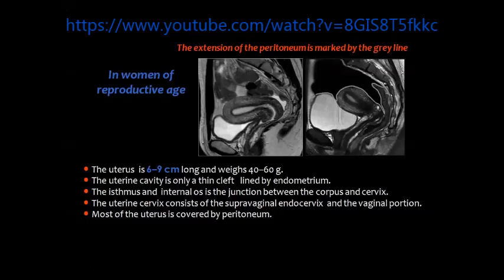In the reproductive age the uterus is about 6 to 9 cm long and weighs about 50 grams. The uterine cavity is lined by endometrium, which is of bright signal on the T2-weighted image — fluids are bright on T2, as seen also in the urinary bladder. There is a dark band known as the junctional zone, and the gray muscles of the uterine body appear of intermediate signal on T2. You can continue into the cervical canal and the upper part of the vagina.